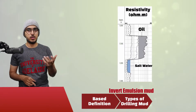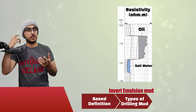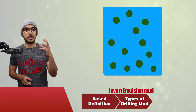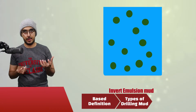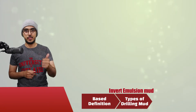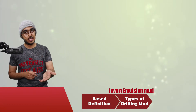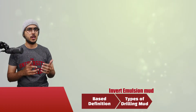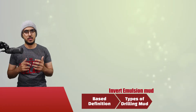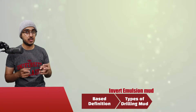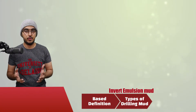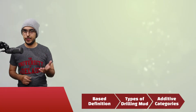Moving on to the third type of drilling muds, which is emulsion muds — it's the opposite of oil-based muds, with a majority of water and the minority as oil. I'll postpone talking about this type and gas-based muds to the next video, because gas-based muds are used in something called underbalanced drilling, which I think deserves a whole video about it.